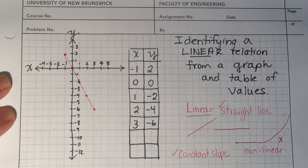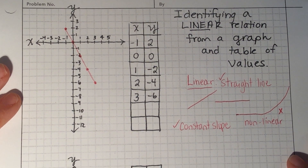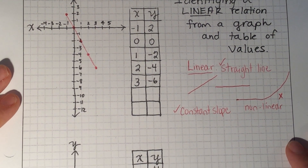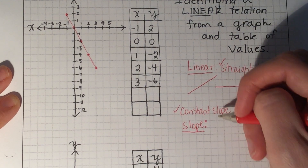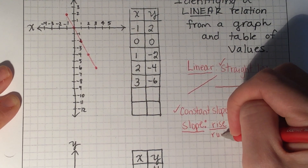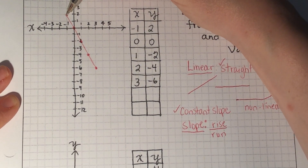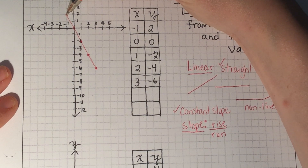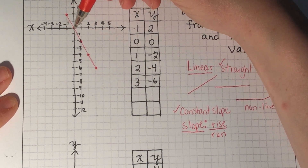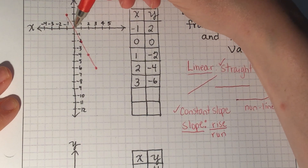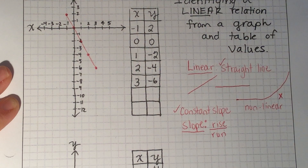We can see that the slope is constant. When we're thinking about slope, what we're really thinking about is rise over run. When I start at one point and go to the next, I'm looking at how much I rise — how much I change going up and down. In this case I change negative two, so I'm actually descending. That's a rise of negative two and a run of positive one — one step in the positive direction on the x-axis.